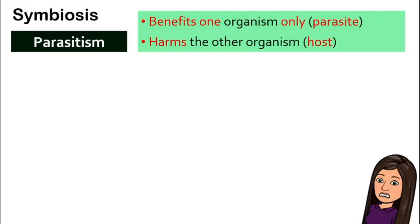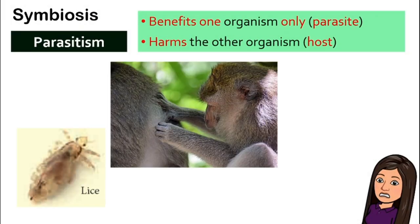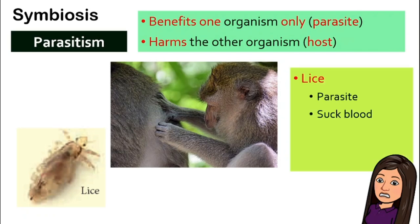Another example is lice. Lice also live on another animal's body — the lice is the parasite that sucks blood from humans or animals, which is the host. One is very happy, the other is not. So we have now looked at all three different types of symbiosis.